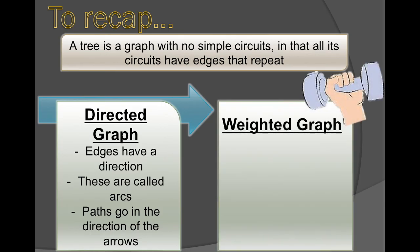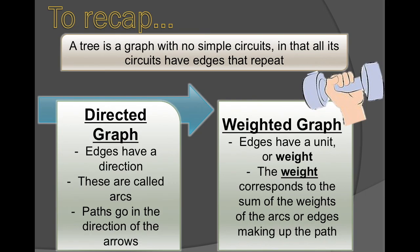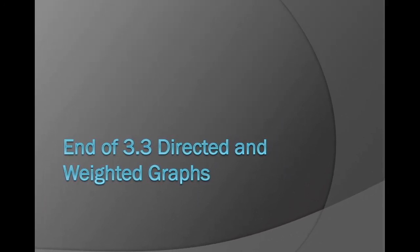And finally we learned about weighted graphs. A weighted graph are when edges or arcs have a unit or weight to them. The weight corresponds to the sum of the weights of the arcs or edges that make up the path. And that is the end of 3.3 directed and weighted graphs.